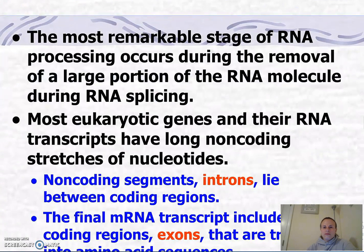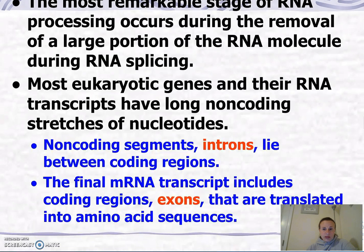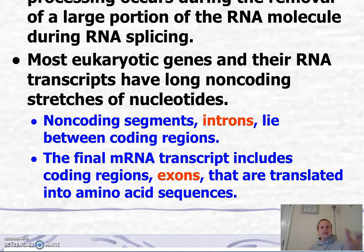The most remarkable stage of RNA processing occurs during the removal of a large portion of the RNA molecule, called RNA splicing. In our messenger RNA we have non-coding segments and coding segments. The non-coding segments are called introns and they lie between the coding regions. The final messenger RNA includes just those coding regions, called exons, which can then be translated into amino acid sequences.